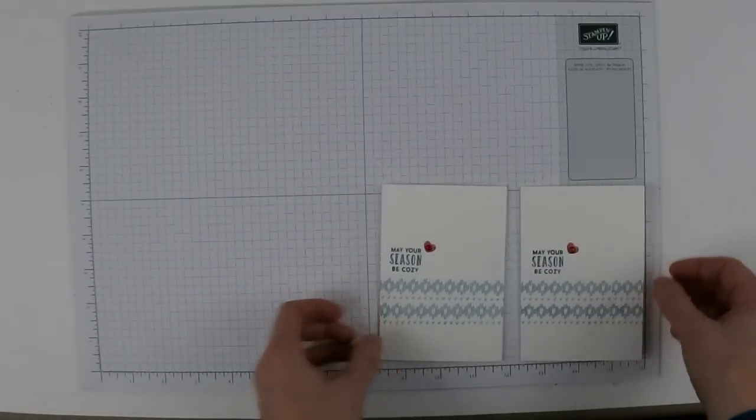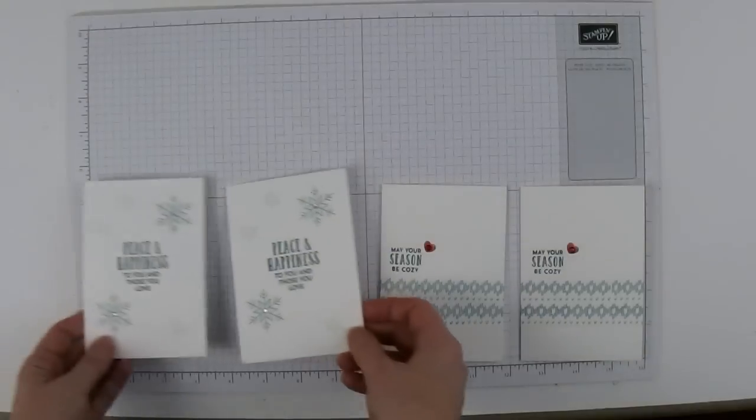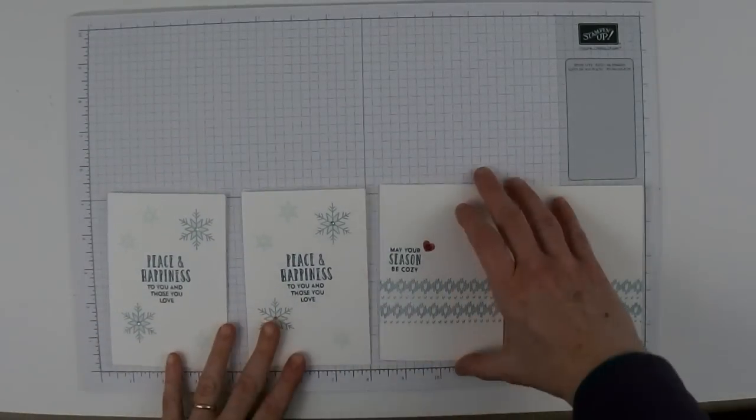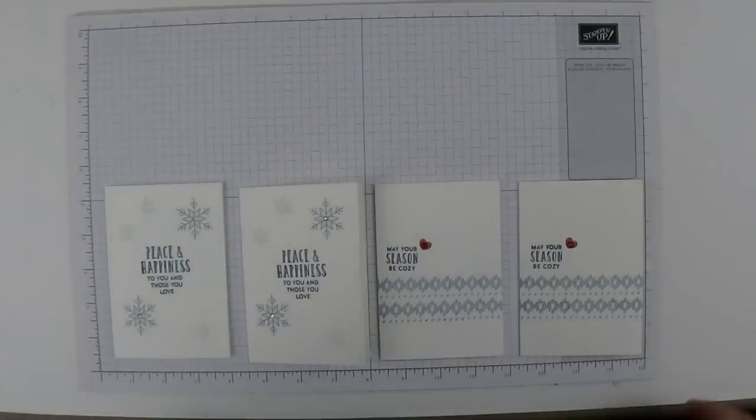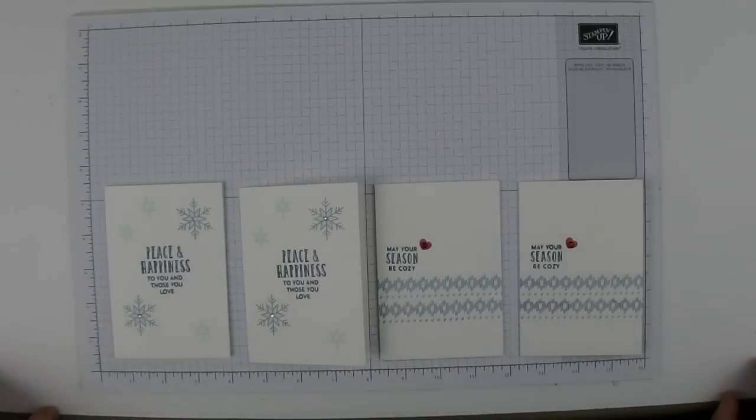So you can see it's pretty easy to make these cards really quickly but they're still pretty. If you want to you can even stamp the little envelopes that go with them. Just put a snowflake or a little heart on the back and then you're good to go and ready to mail off some Christmas cards.